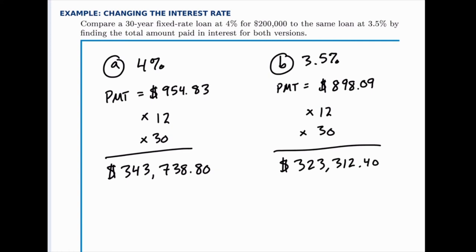You can already see that you're saving some by dropping the interest rate to 3.5%, but the question specifically said by finding the total amount paid in interest for both versions, that's how we'll compare them.